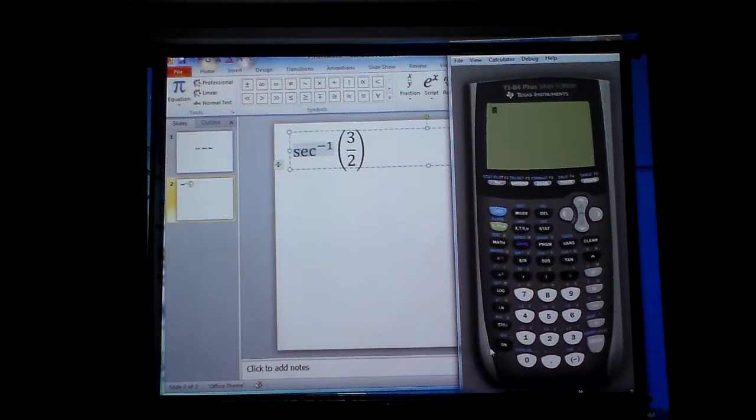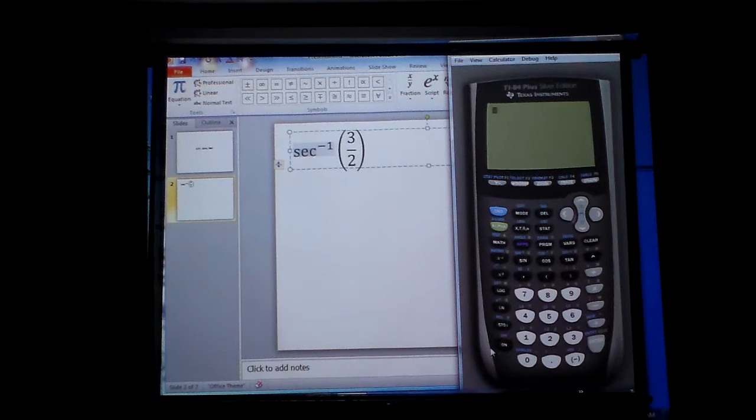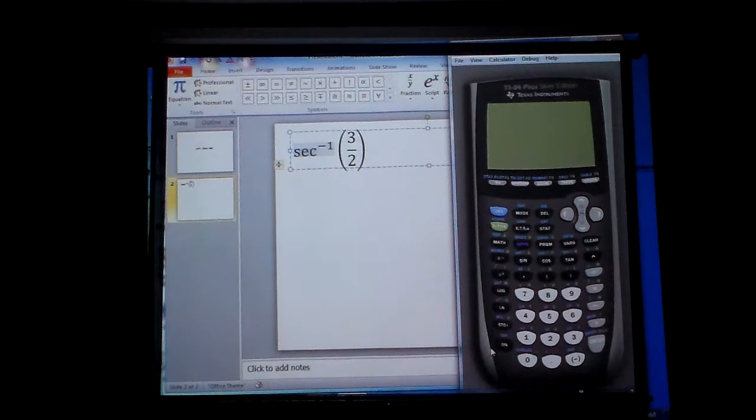Basically, they give us the ratio of secant and ask us to find the angle. I use this to find the angle, and what it's telling me is that the hypotenuse was 3 and the adjacent side was 2, but there's no arc secant button on the calculator.